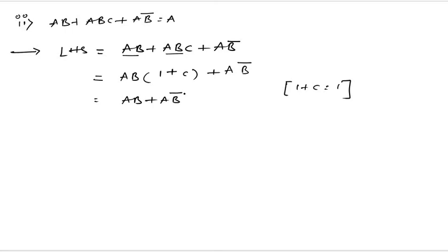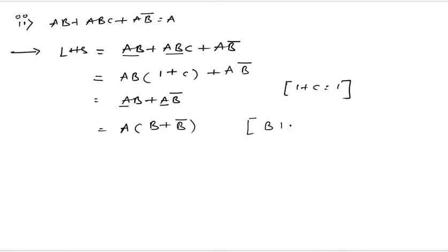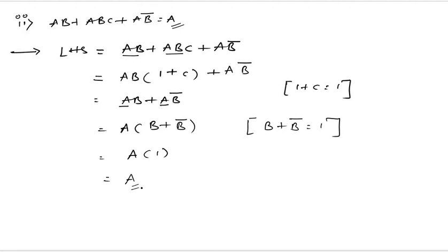In the next step, check for common terms again. We see a and a, so take a as common from both terms, leaving b plus b-bar. Now observe: b plus b-bar equals 1 by the Boolean postulates. So we are left with a into 1, and the final answer is a — which is exactly our RHS. Hence proved.